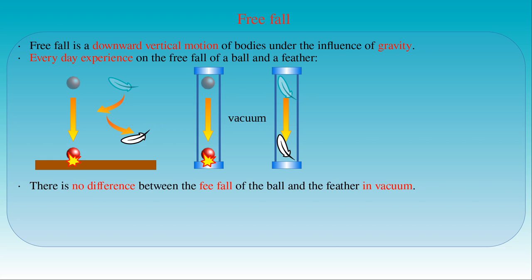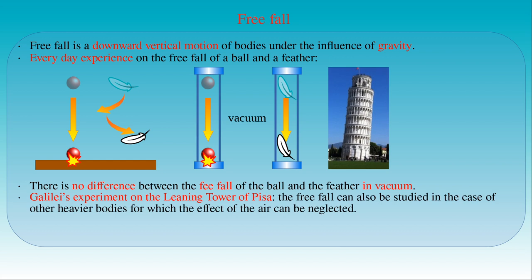The free fall experiment can be carried out in a more systematic way. Perhaps the most famous experiment studying the law of free fall is attributed to Galileo Galilei, although there is no account by Galileo himself of it, and it may be regarded as a thought experiment. According to one of his pupils, Galileo performed an experiment on the leaning tower of Pisa, from which he dropped two spheres of different masses to demonstrate that they hit the ground at the same time — that is, their speed is independent of their mass.